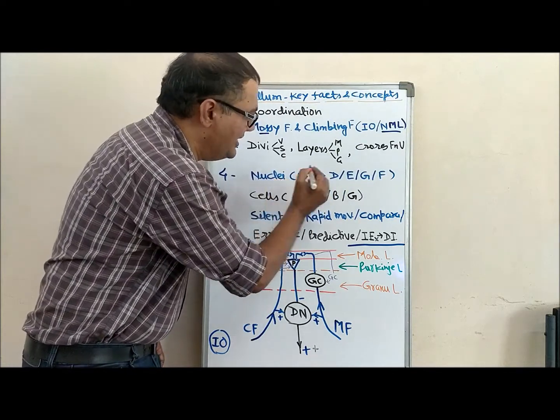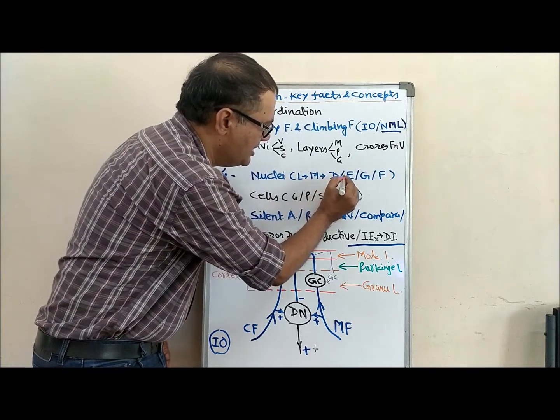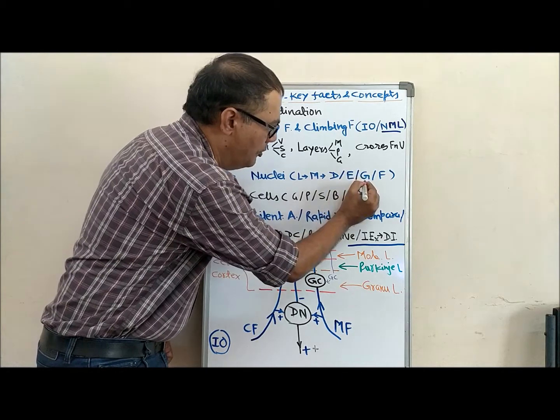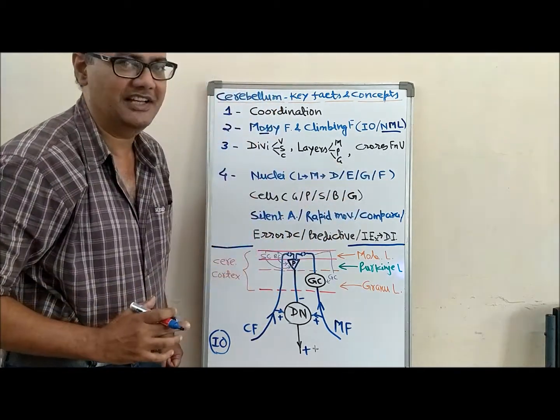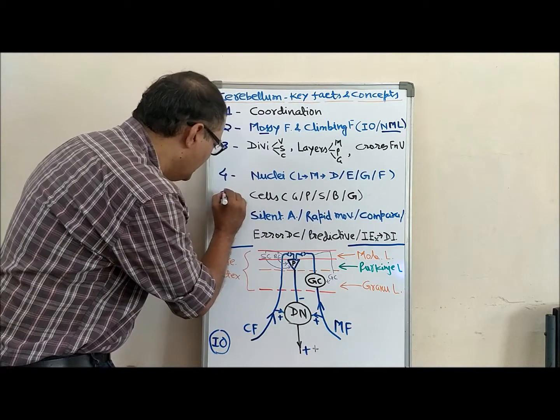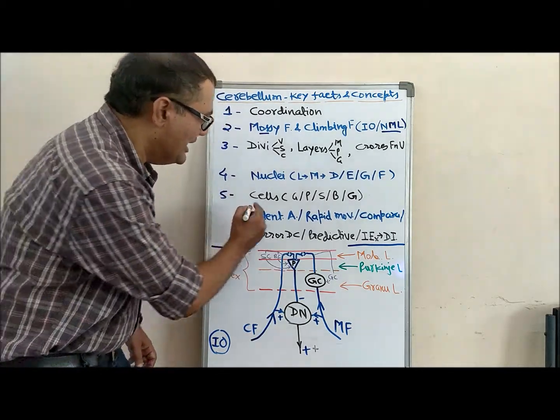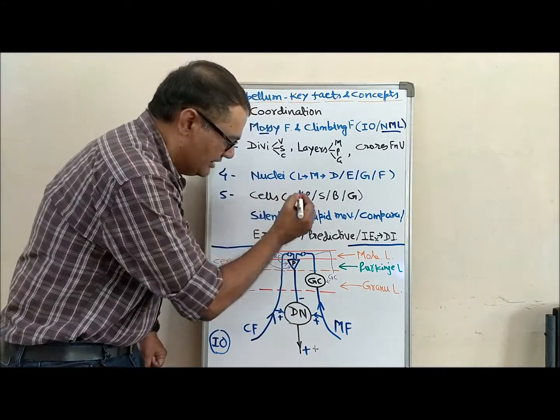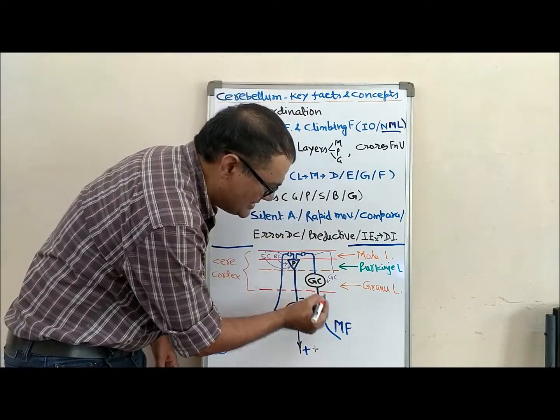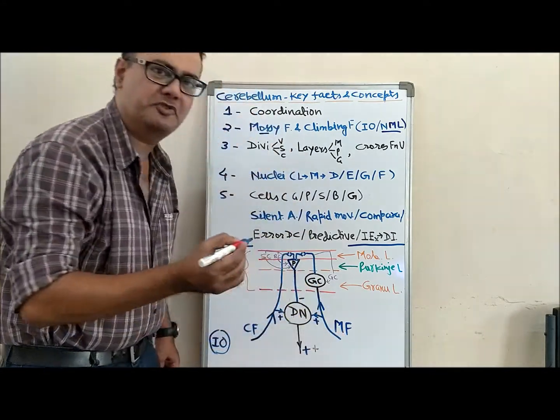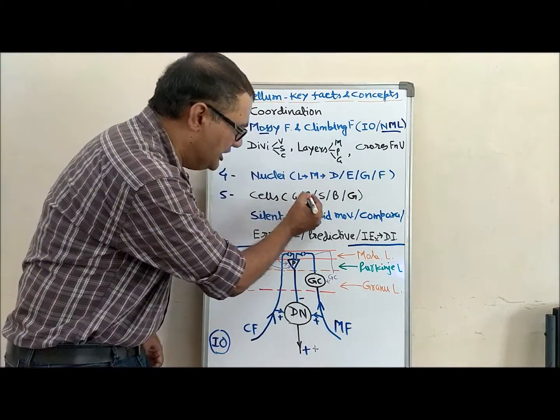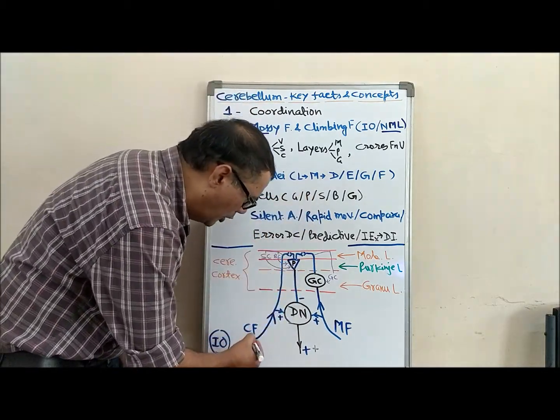We have five types of cells present in cerebellum. These are granular cells which receive inputs from mossy fibers, and Purkinje cells where both climbing fiber and granular fibers ultimately synapse.